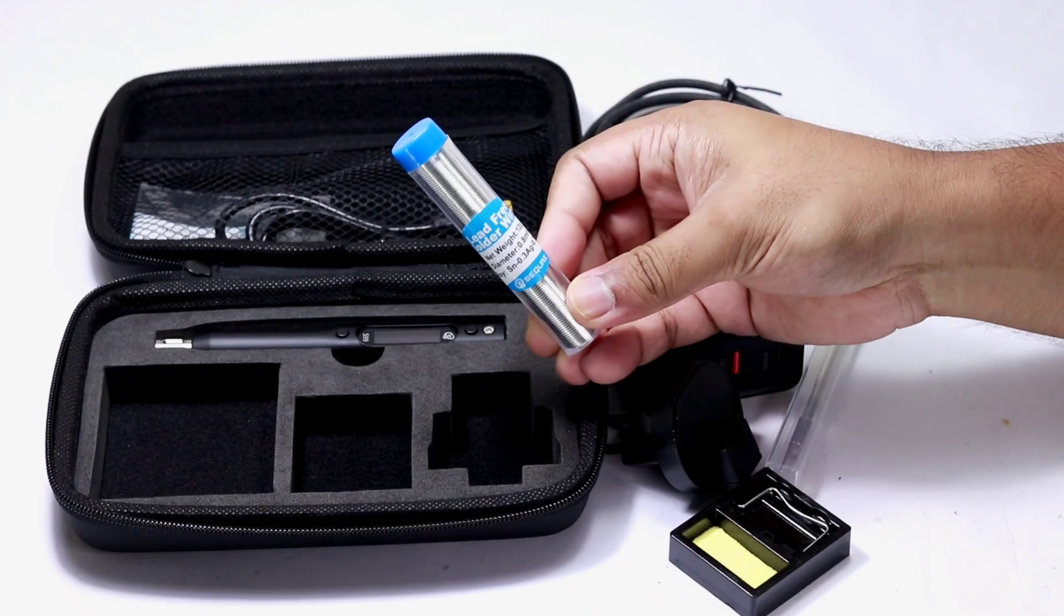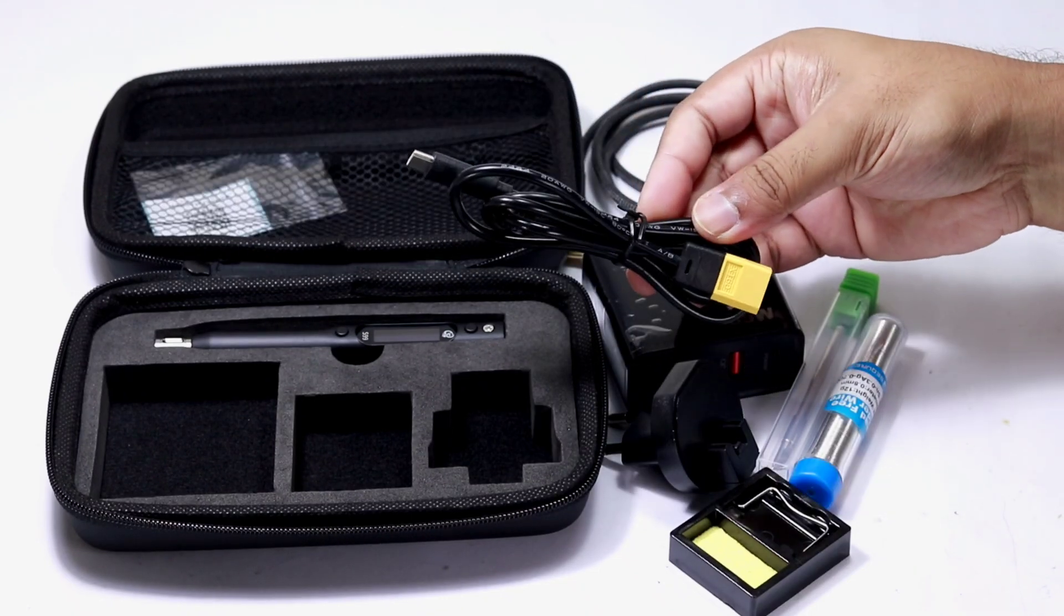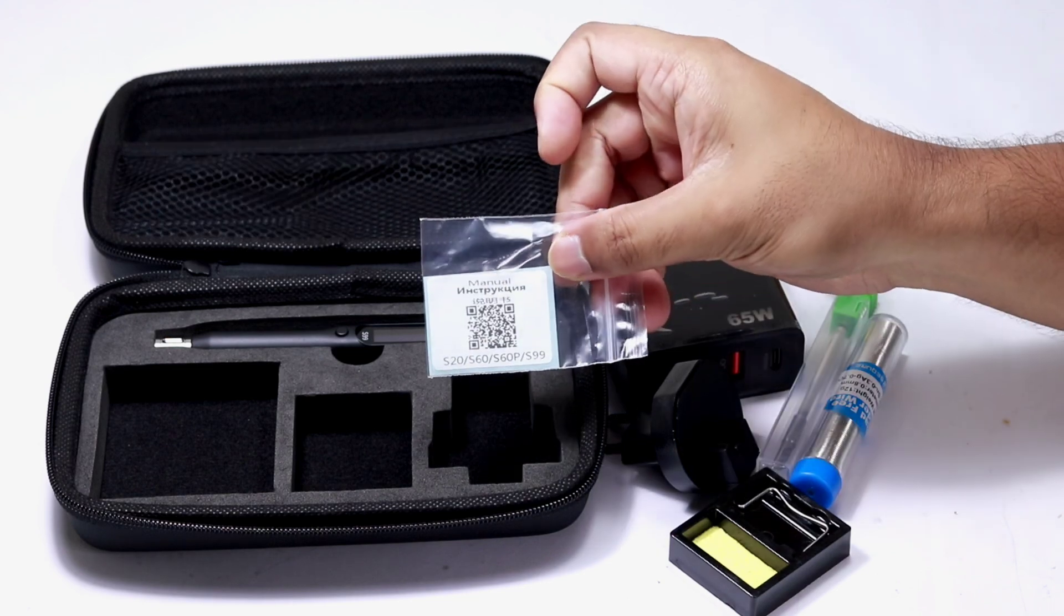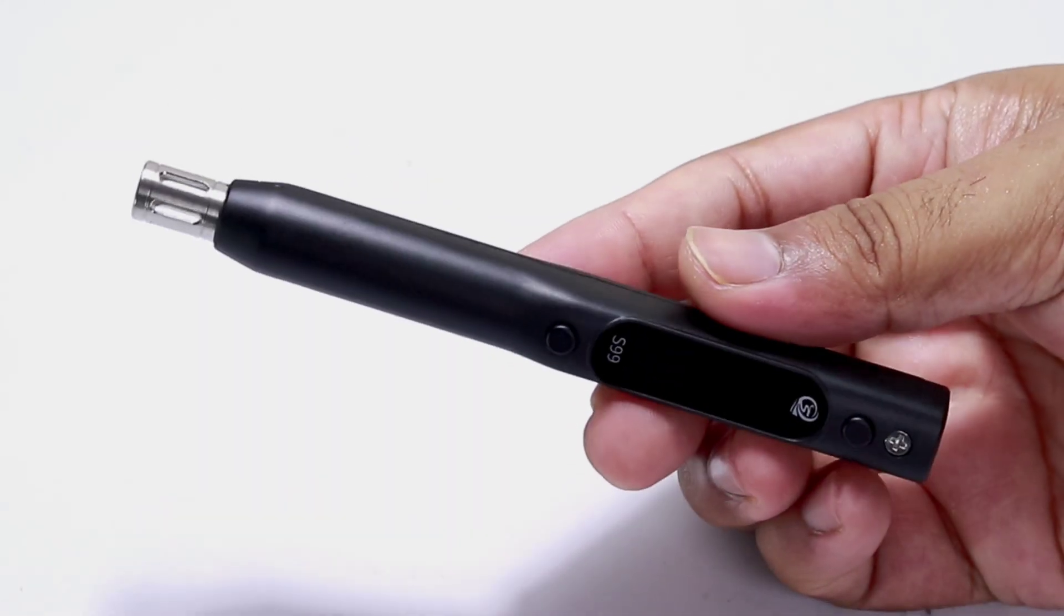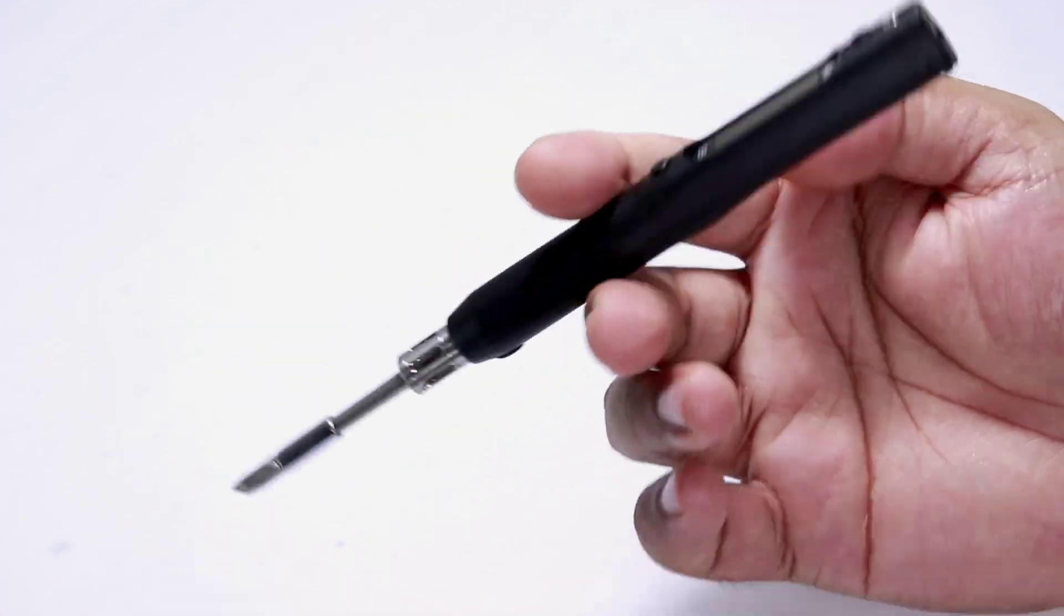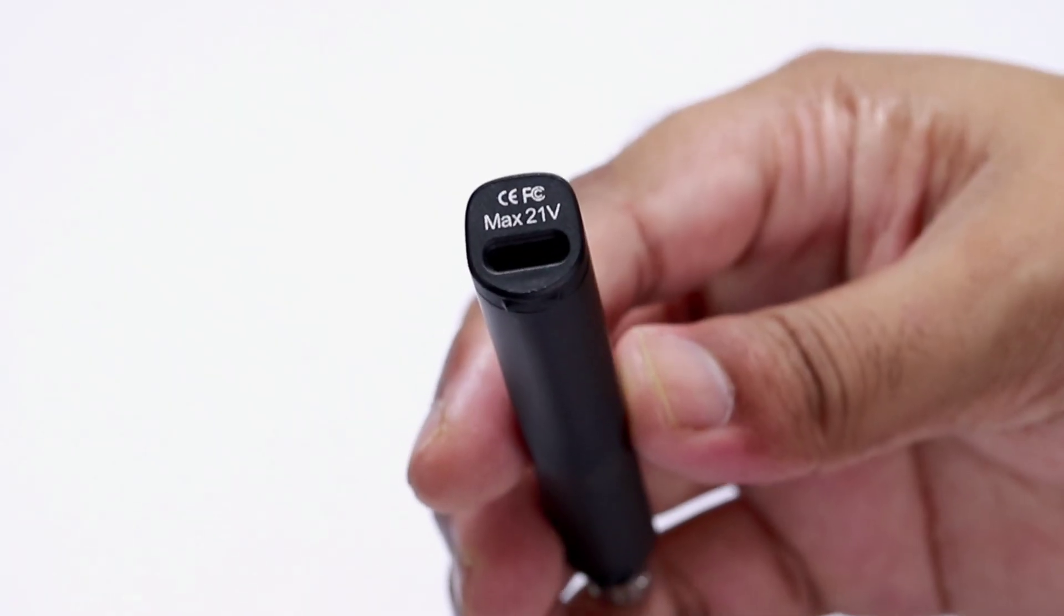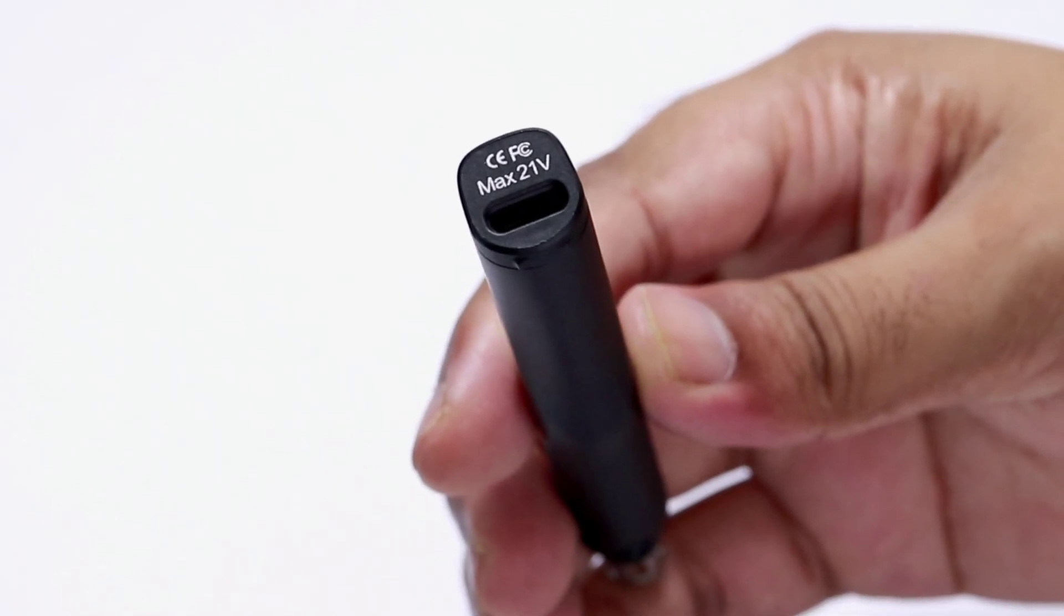Soldering tip, some soldering lead, XT60 to type C cable, user manual and finally the compact and smart soldering iron. The S99 iron fits in my palm and the USB port is on the rear end of the iron.